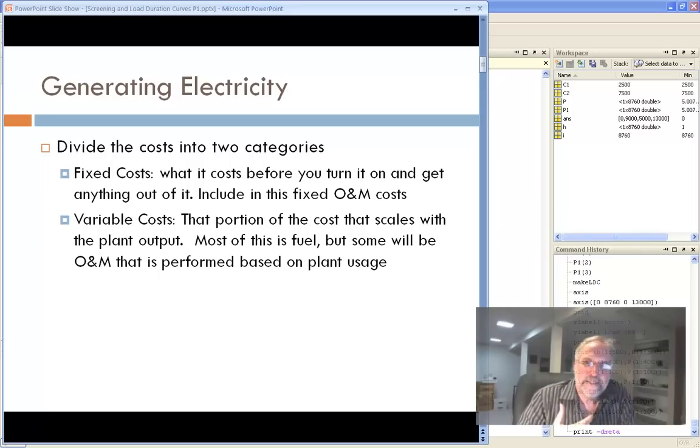So in looking at these facilities that generate electricity, we look at the cost. And we separate it into two categories. The fixed cost, also often called the capital cost. These are the upfront costs, planning, designing, constructing, large sums of money that are required. And then the variable costs. Mostly fuel, but other things that are set up on a per kilowatt hour basis.